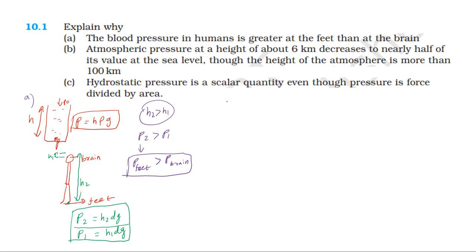we have atmospheric pressure at height about 6 km decreases to nearly half of its value at sea level. Pressure at the surface of earth, sea level is P0. Pressure at 6 km height, let them be at different heights.